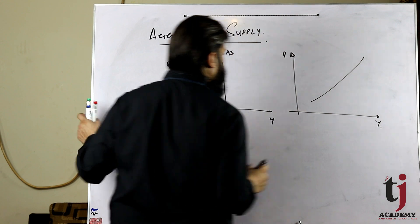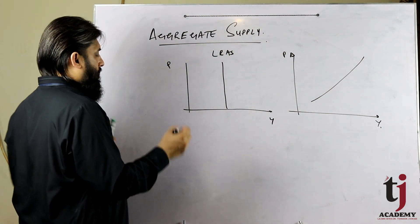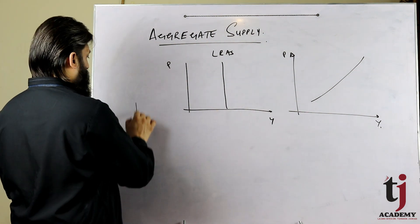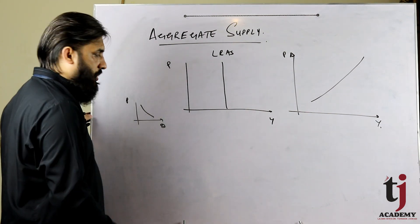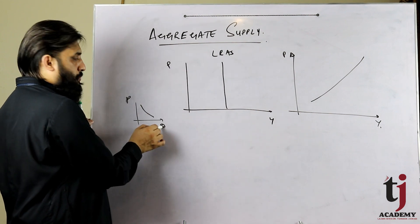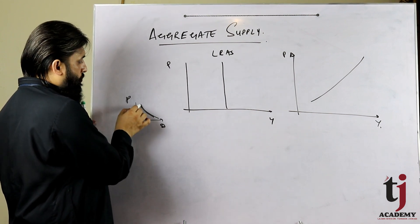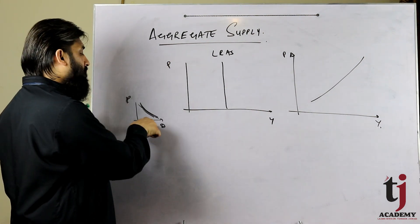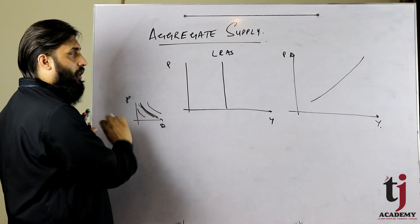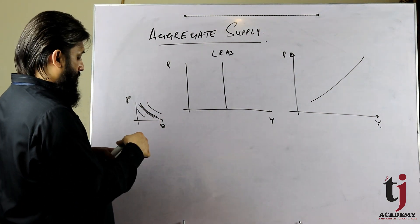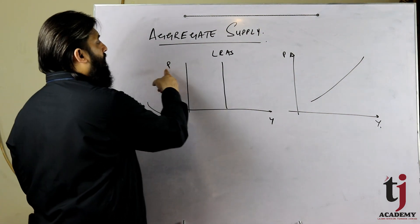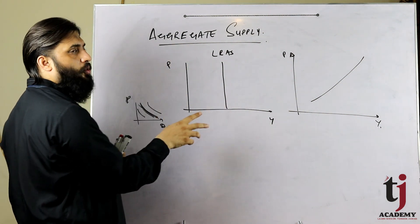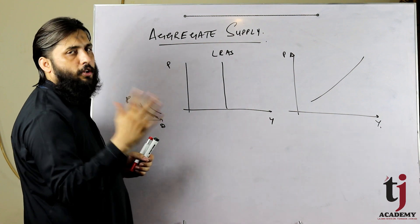If price changes, there will be a movement along the aggregate supply curve. If any factor other than price changes, then the curve will shift. Classicals said that the price-output relationship is not direct — price level depends on the quantity theory of money, i.e., on money supply.